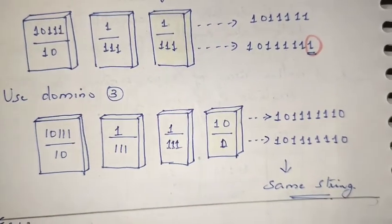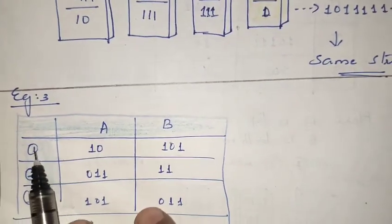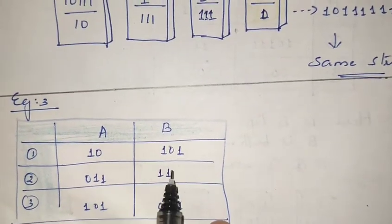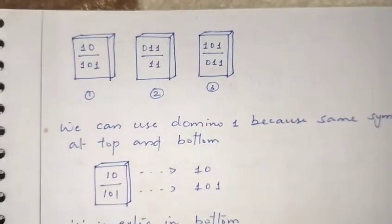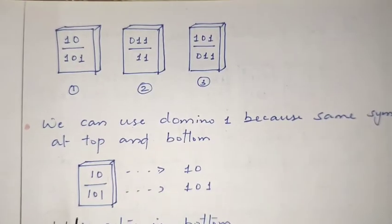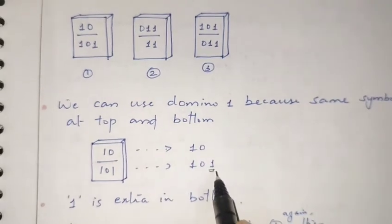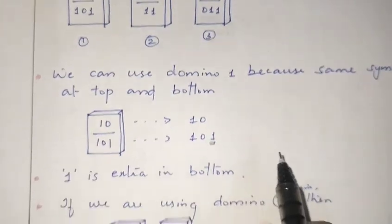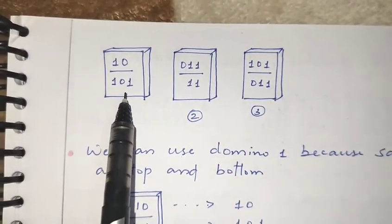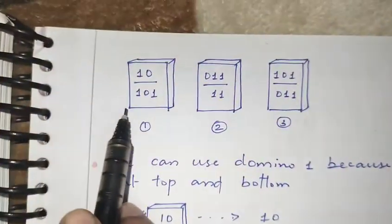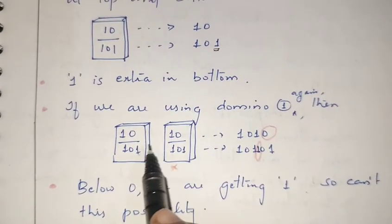Let's see one more example. The dominoes are: '10/10', '1011/11', and '101/011'. We need a domino where the first symbols of top and bottom match. Taking the first domino '10/10', they are the same. There is an extra '1' in the bottom, so I need a domino with '1' in the top.